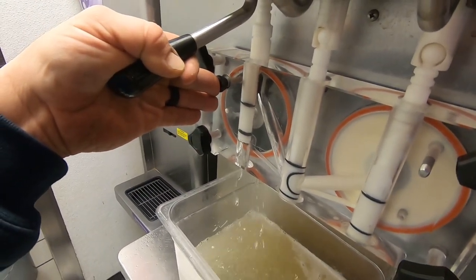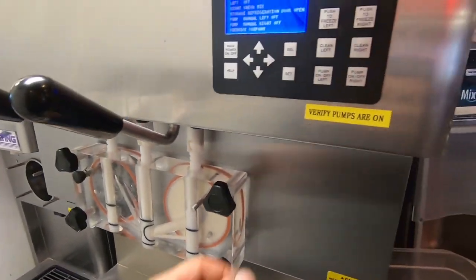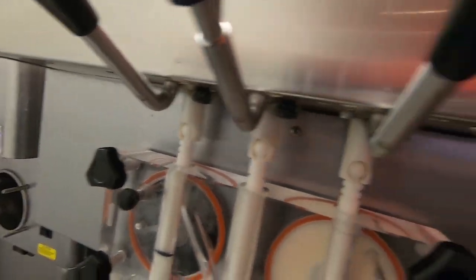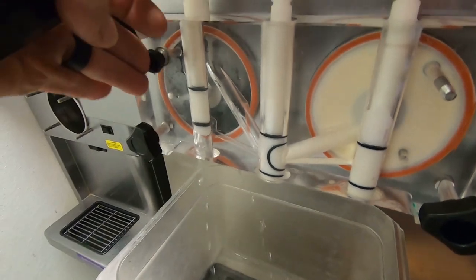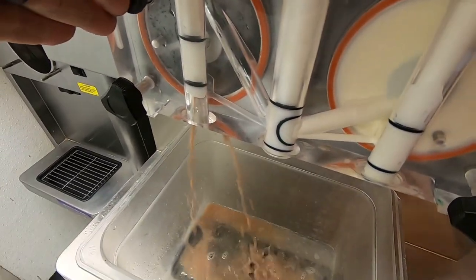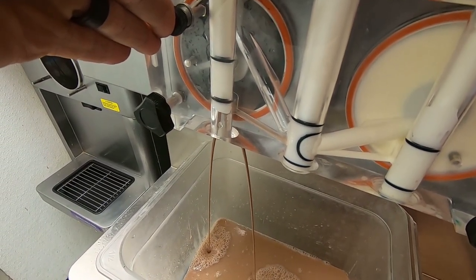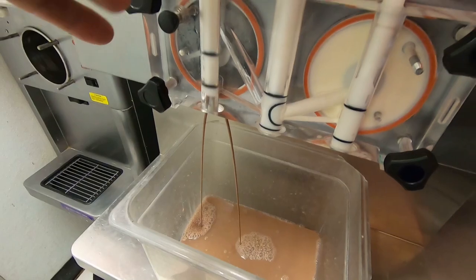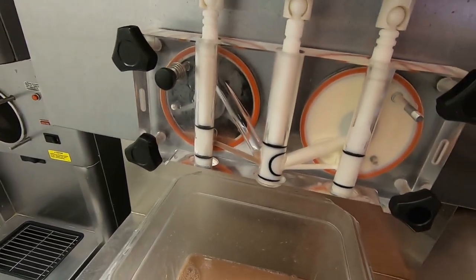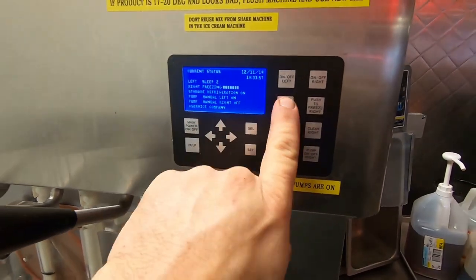Once that's done we'll go ahead and prime her up and get this thing froze down. Got her all mixed up, got our probes on there. Go ahead and prime up this one. Let it push all the sanitizer out. A nice clean solid stream of mix, make sure that your sanitizer is completely out of there. Let her fill up and we'll kick her to freeze.